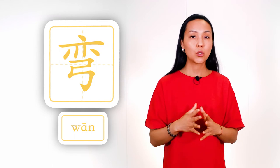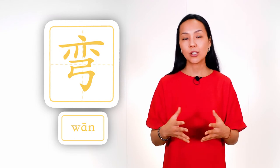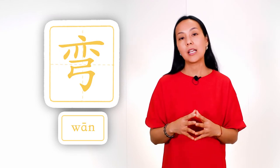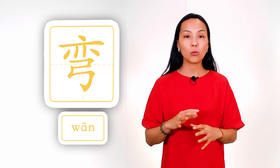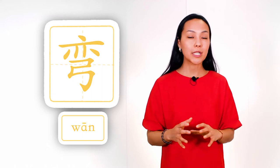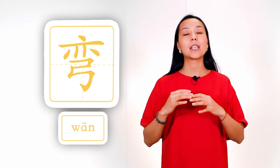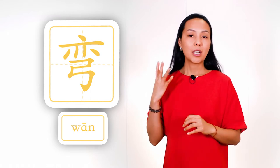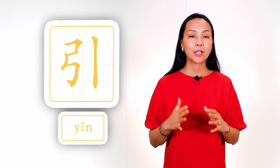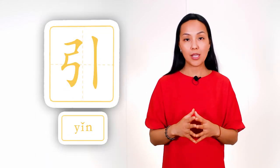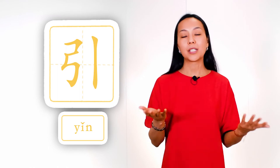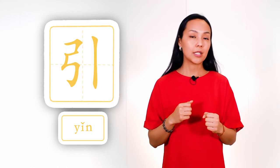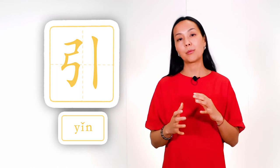Example number three: to bend, to curve. And again, when we bend or curve something, it has a kind of bow shape. Example number four: to stretch. And again, when we stretch something, it becomes bow-shaped.